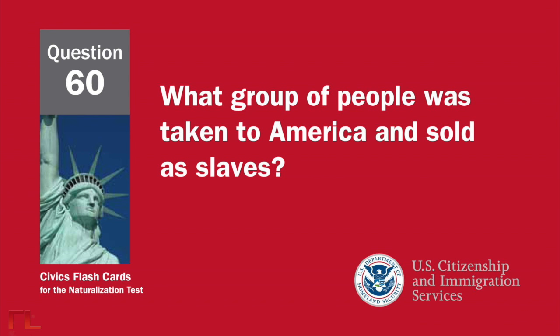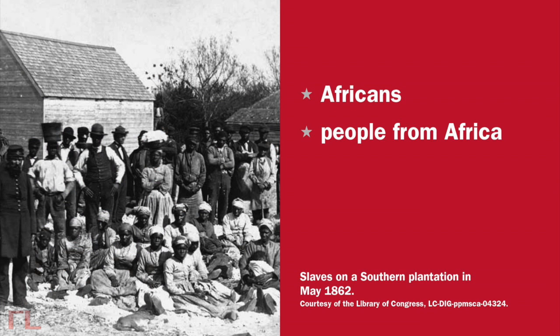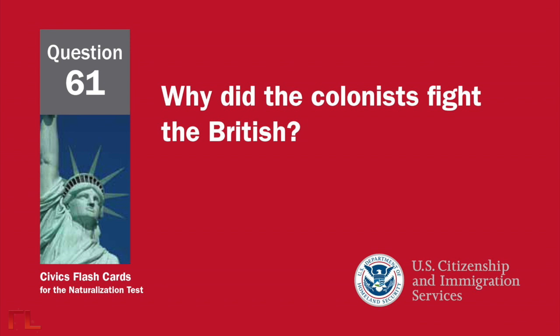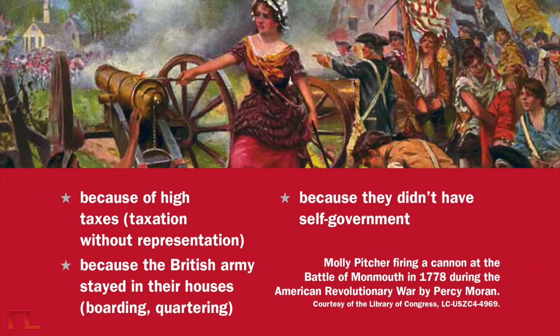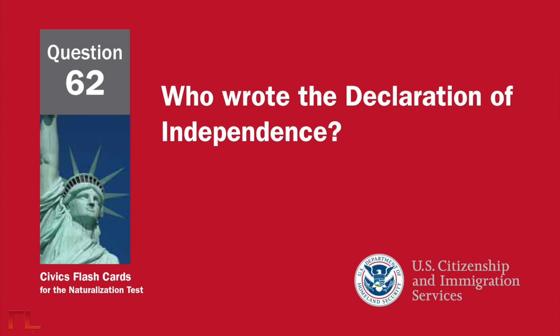What group of people was taken to America and sold as slaves? Africans, or people from Africa. Why did the colonists fight the British? Because of high taxes, taxation without representation, because the British army stayed in their houses — boarding or quartering — or because they didn't have self-government.